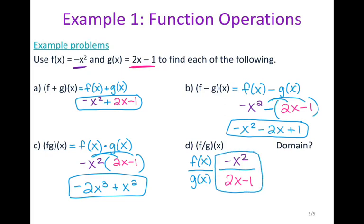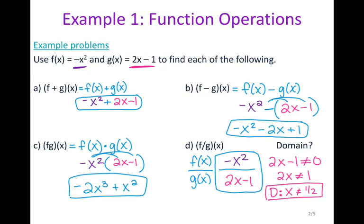For the quotient we do ask for domain because you can never divide by zero. So the denominator 2x minus 1 cannot equal zero. Solving: add 1 to both sides giving 2x cannot equal 1, then divide by 2, so x cannot be one half. Your domain is every single value of x except one half, because plugging one half in gives a zero in the denominator.